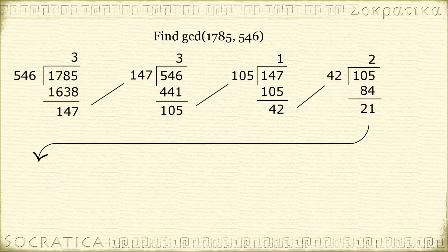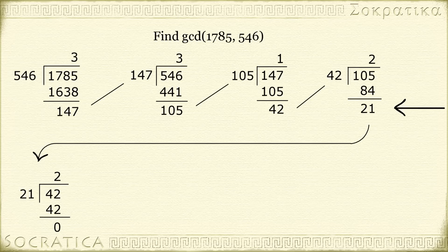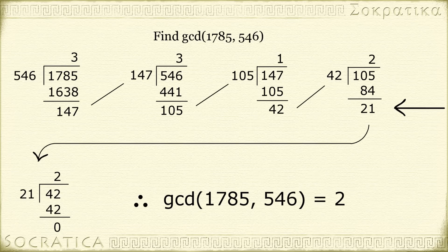And one more time, we divide 42 by 21. We get a quotient of 2 and a remainder of 0. When you get a remainder of 0, you stop — the method is over. The last non-zero remainder is the greatest common divisor. In this case, it's 21. Therefore, the greatest common divisor of 1,785 and 546 is 21.